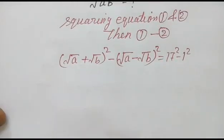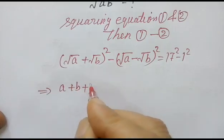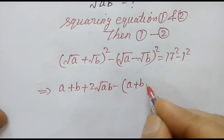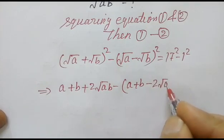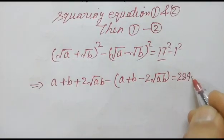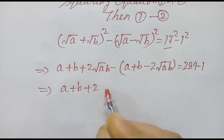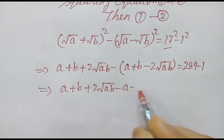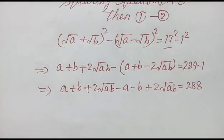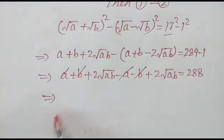Expanding this, we get: a + b + 2√(ab) minus (a + b − 2√(ab)) equals 289 minus 1, which equals 288. So a + b + 2√(ab) − a − b + 2√(ab) equals 288.